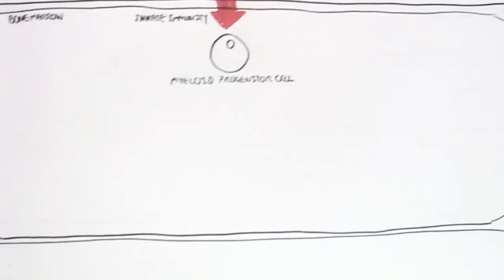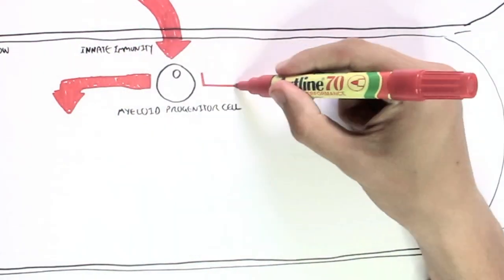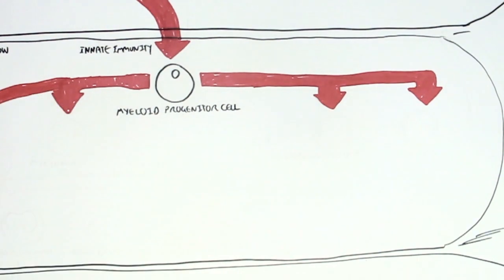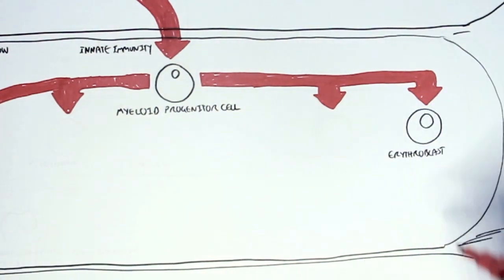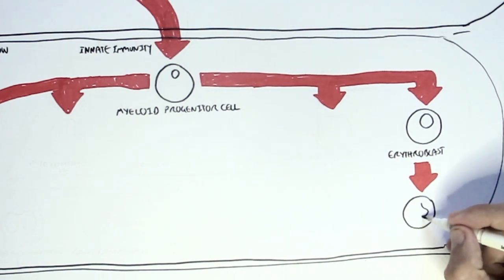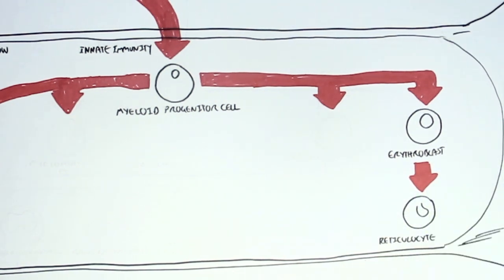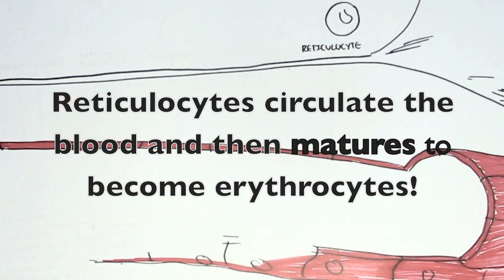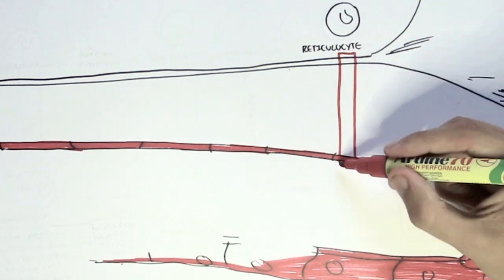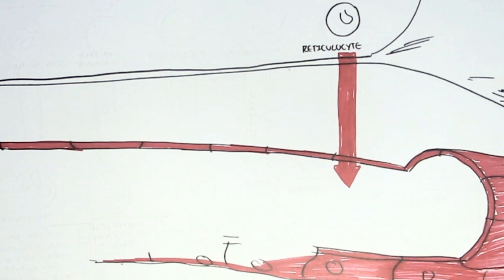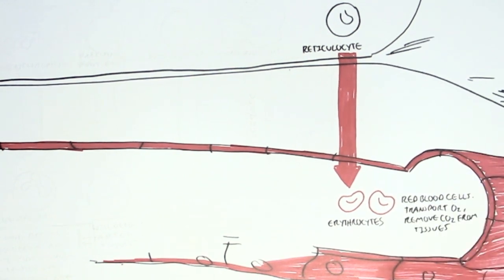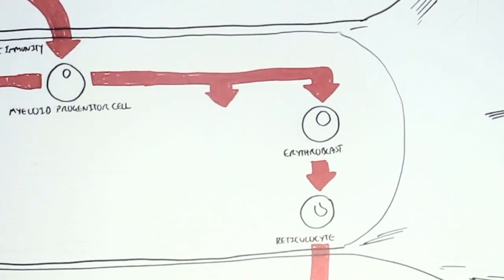Beginning with the myeloid progenitor cell: it can divide to give rise to what's called an erythroblast. An erythroblast can later give rise to a reticulocyte. The reticulocyte will then leave the bone marrow and circulate in the bloodstream, where it will mature to become an erythrocyte, or red blood cell. Red blood cells are important because they carry oxygen and transport it to different tissues, and remove carbon dioxide from our body to be exhaled out.